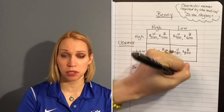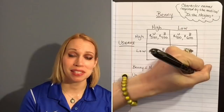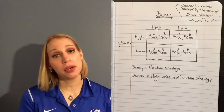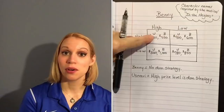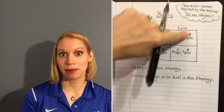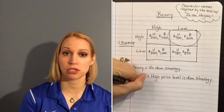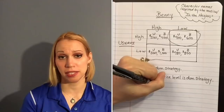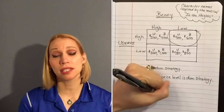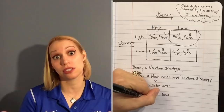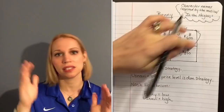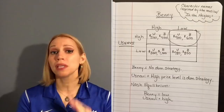Now let's find the Nash equilibrium — the situation where each person is doing the best they can and has no motivation to change their strategy. We know Usnavi is going to charge a high price because that's his dominant strategy. So it would be best for Benny to charge a low price — he'd rather make $600 than $400. Our Nash equilibrium is in the top right corner: Benny charging a low price and Usnavi charging a high price. The key is labeling the payoff matrix carefully so you understand which numbers belong to whom and don't get them crossed.